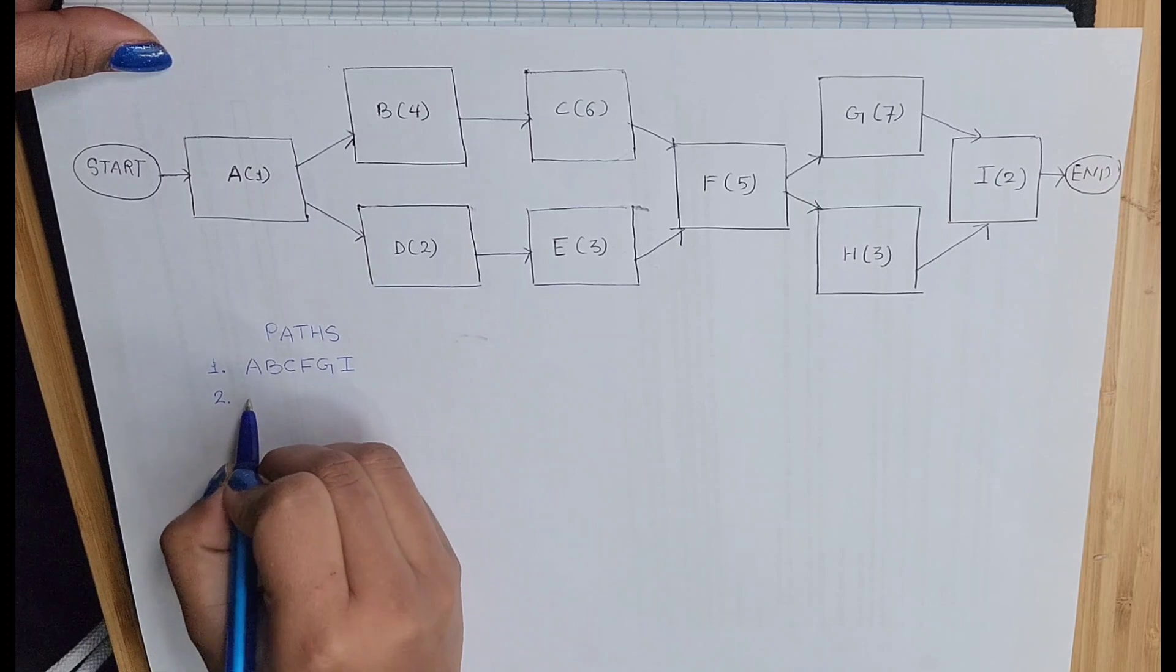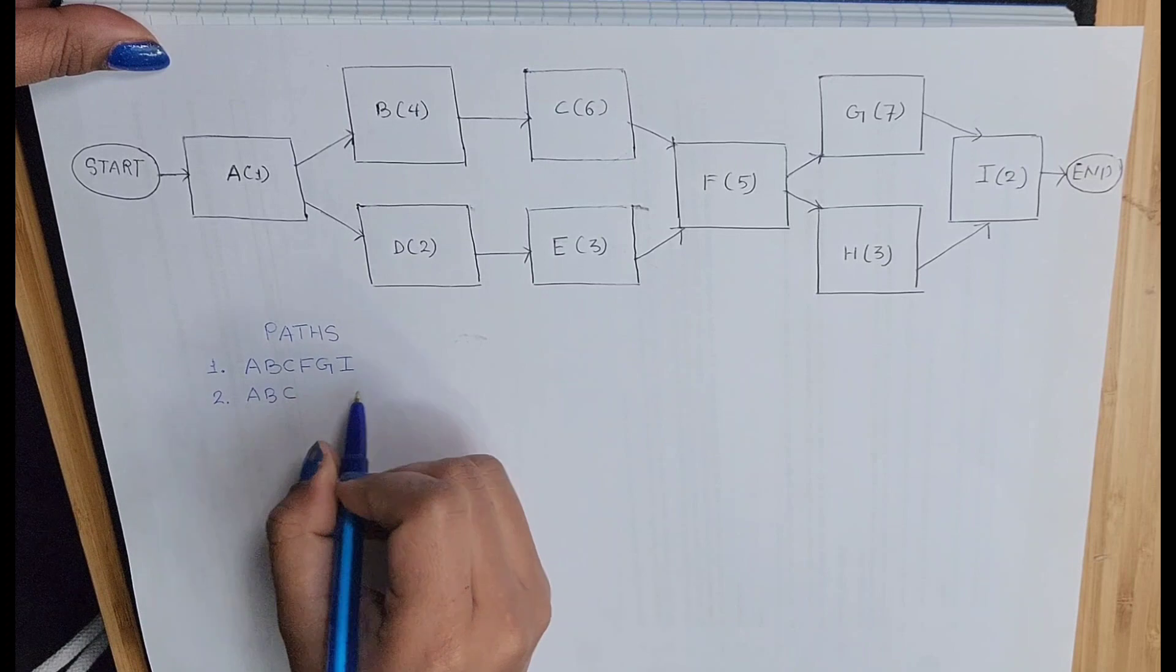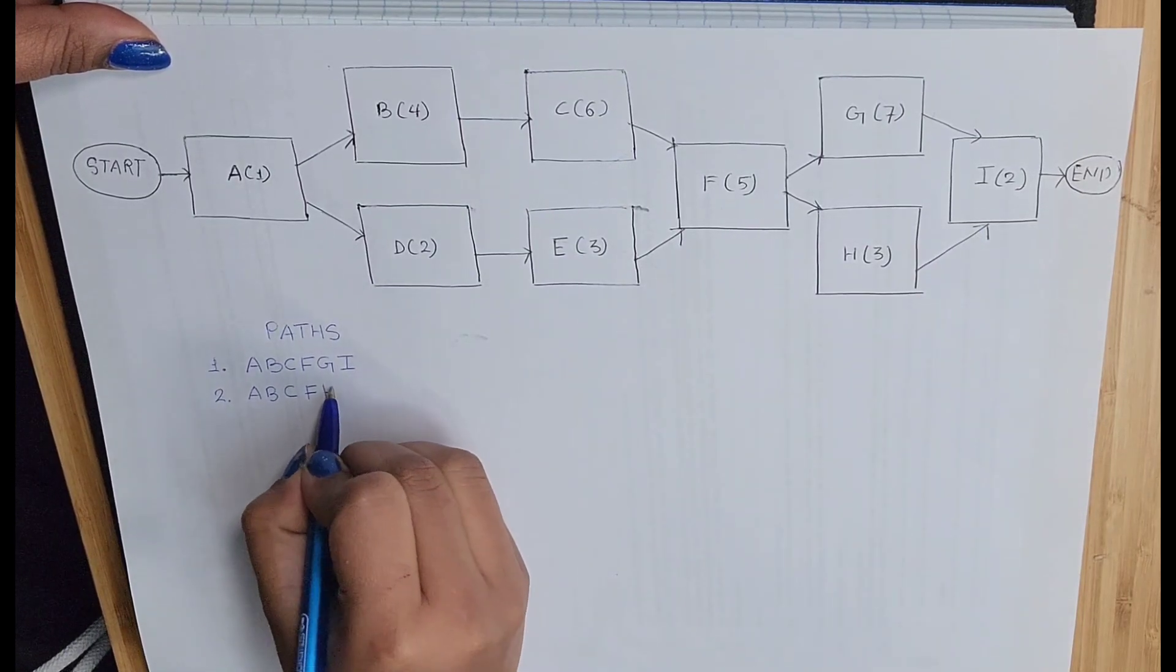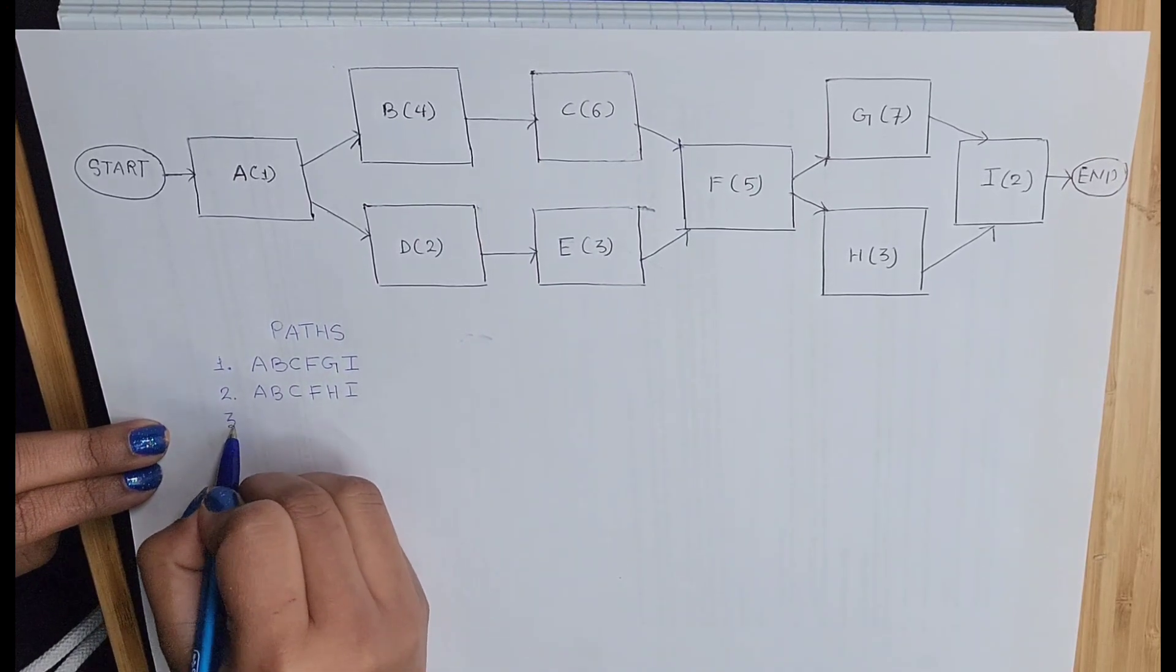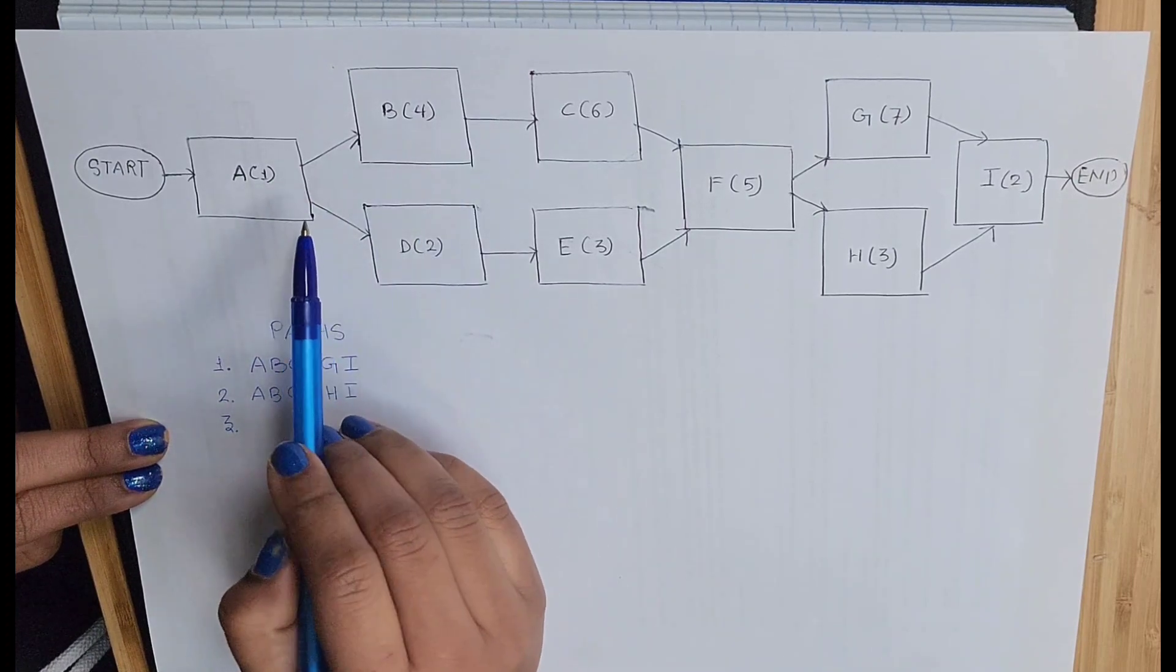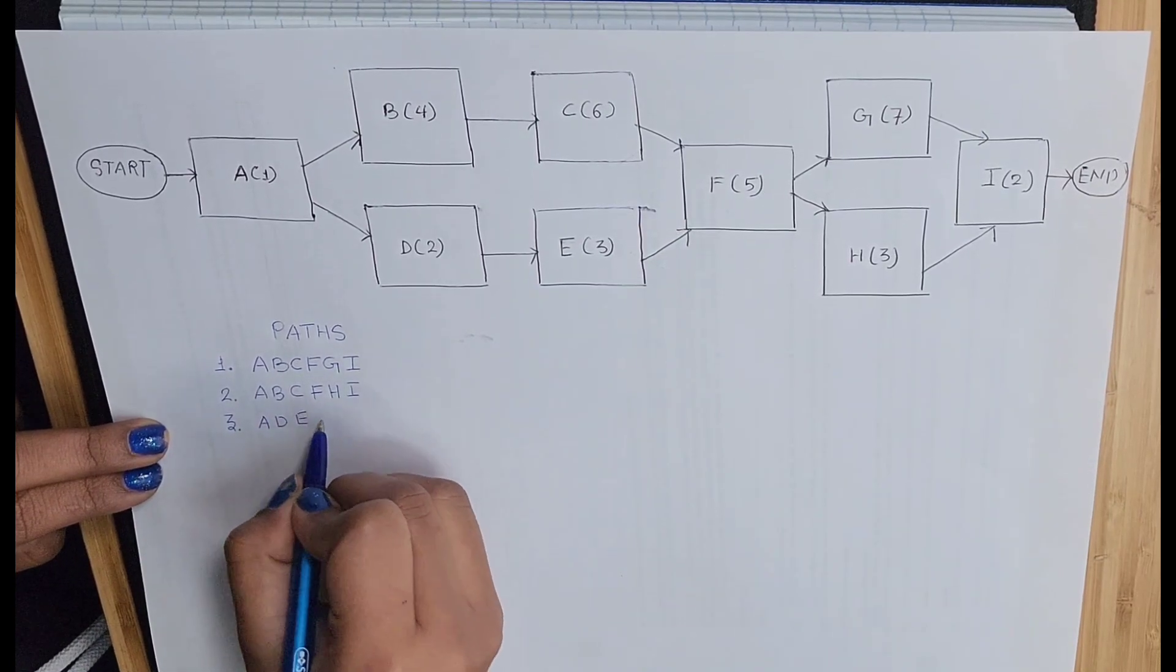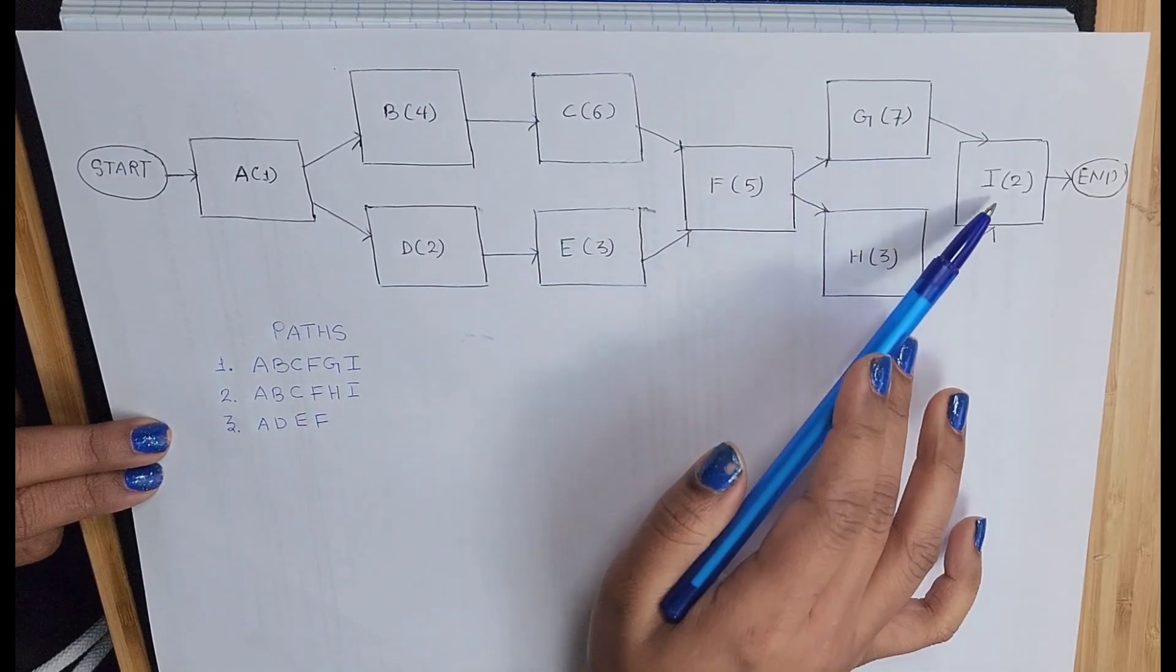Now second possibility could be A to B, B to C, C to F, F to H, and then H to I. Now the third path could be instead of going upward, I can now try to go from here to D. So A to D, then E, then F, then G, and then I.